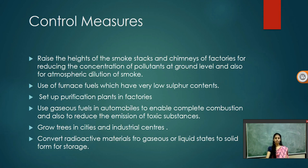Pollution can be reduced by raising the height of the smoke stacks and chimneys of factories, to reduce the concentration of pollutants at ground level and allow atmospheric dilution of smoke. We can also use furnace fuels with low sulfur content, and set up purification plants in factories. Since plants act as a biological filter, they can absorb the gases released from industries and households.